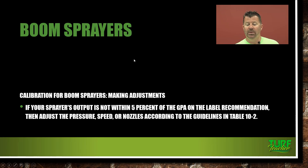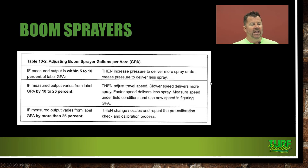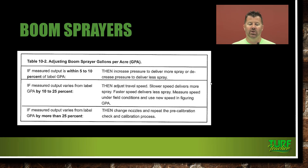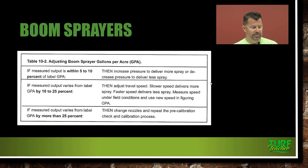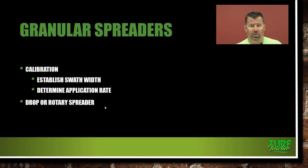Making adjustments: if sprayer output is not within 5% of the gallons-per-acre label recommendation, consult Table 10-2. If within 5–10% of label GPA, increase or decrease pressure. If varying 10–25% from label GPA, adjust travel speed — slower delivers more spray, faster delivers less. If more than 25% off, change nozzles and repeat the pre-calibration check and calibration process. Being 25% over is a major loss of money.